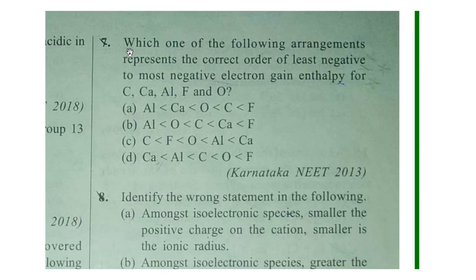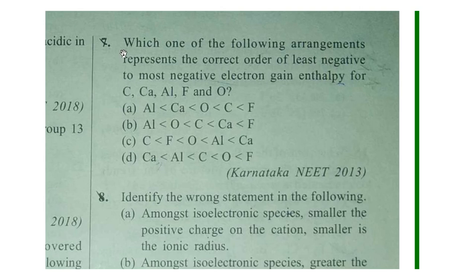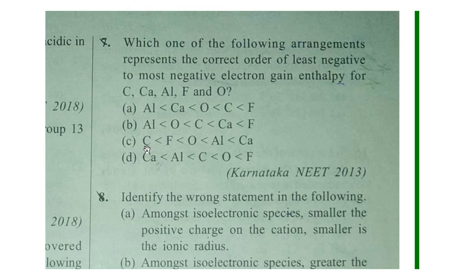Question 7: Which arrangement represents the correct order from least negative to most negative electron gain enthalpy? When we go from left to right across the periodic table, electron gain enthalpy becomes more negative. Going from top to bottom, it becomes more positive (least negative). So the order from least negative to most negative goes: Calcium, Aluminium, Carbon, Oxygen, Fluorine. The answer is option D. If I am going too fast, you can slow down the video to watch slowly.